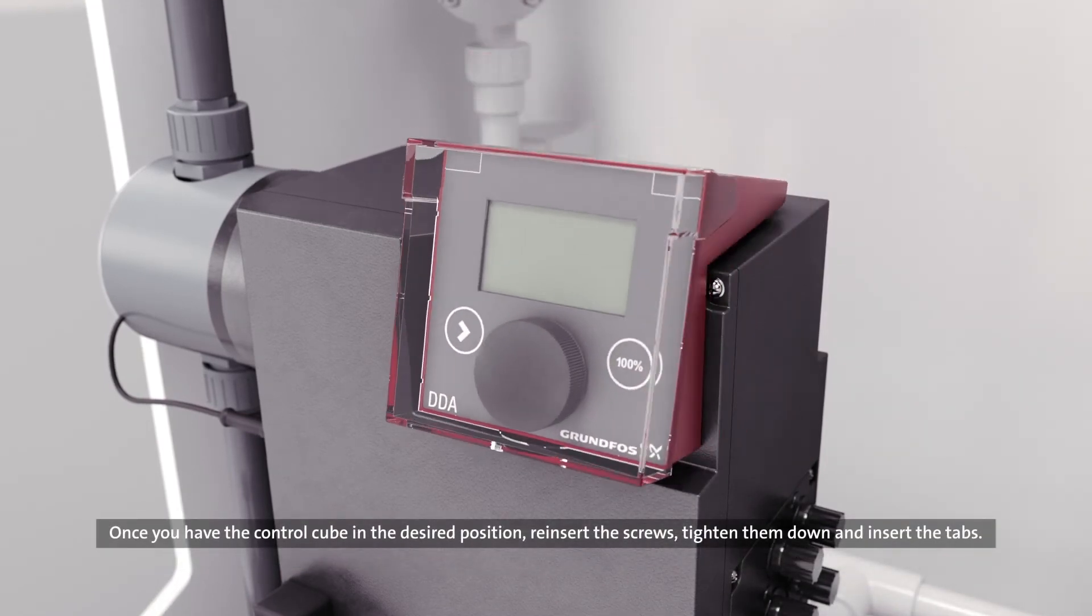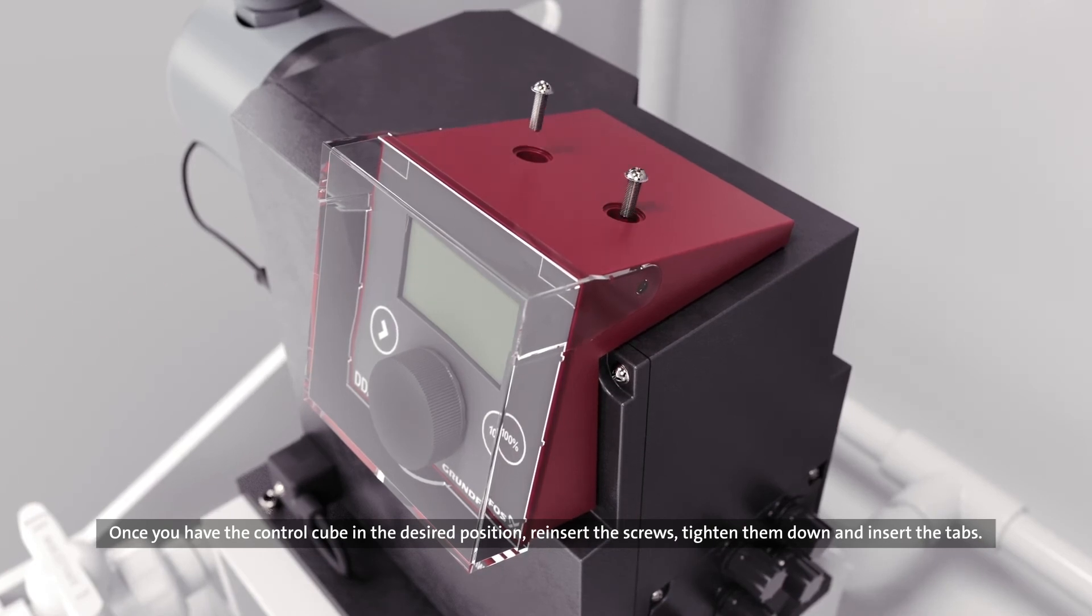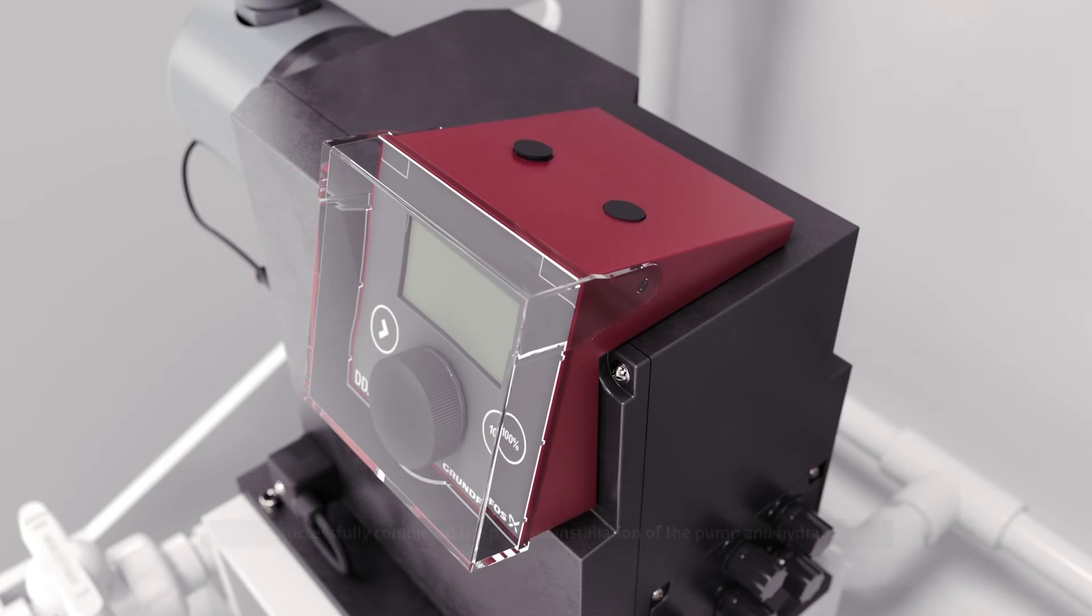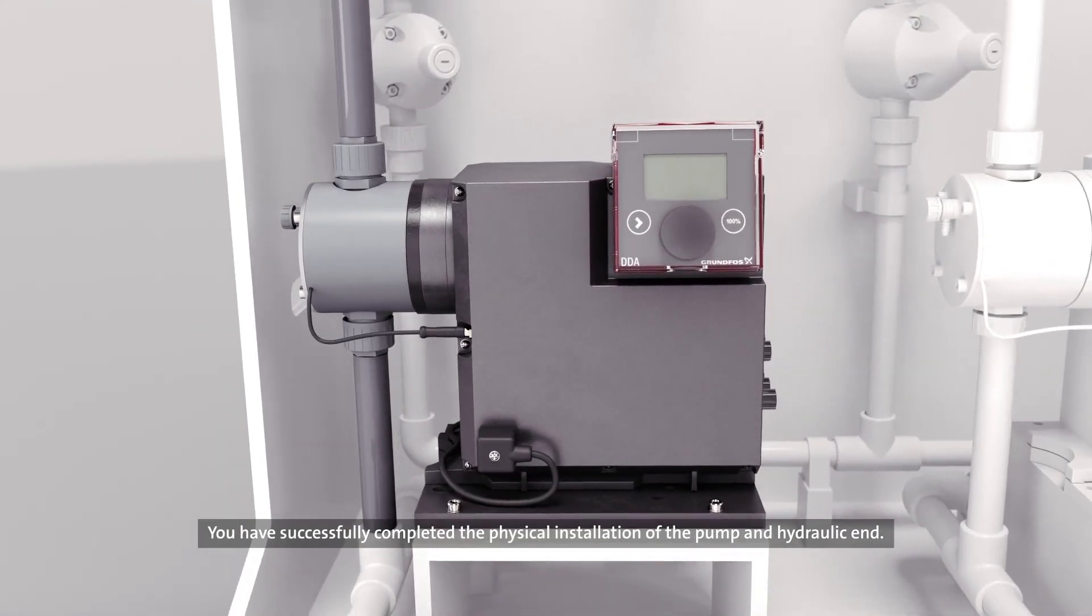Once you have the control cube in the desired position, reinsert the screws, tighten them down and insert the tabs. You have successfully completed the physical installation of the pump and hydraulic end.